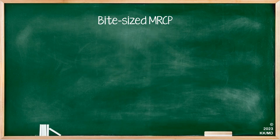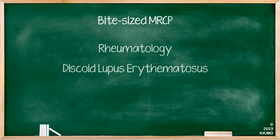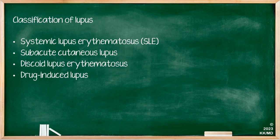Today we will be discussing discoid lupus erythematosus. This is part of our series discussing lupus more broadly. So far we've had a look at SLE and sub-acute cutaneous lupus, and today we'll be discussing discoid lupus.